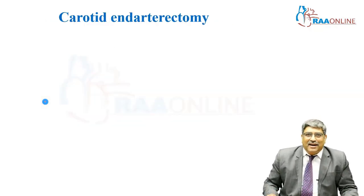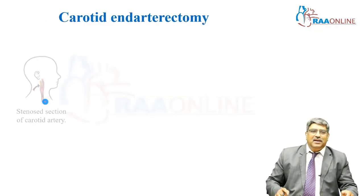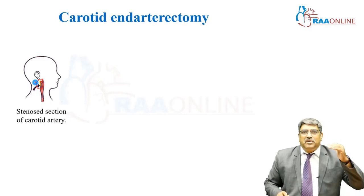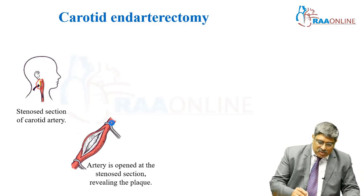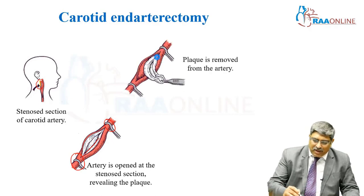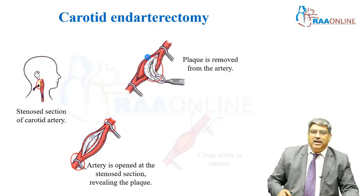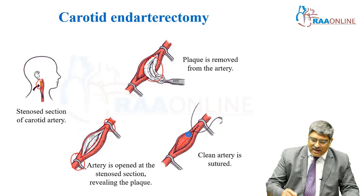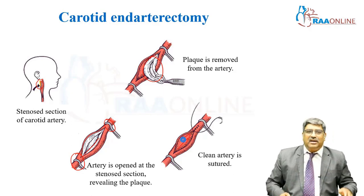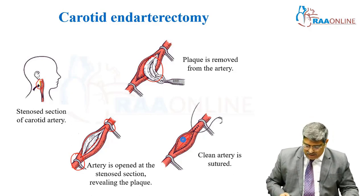Coming to carotid endarterectomy — here there is going to be a plaque in the carotid artery which reduces the blood supply to the brain. What you do is you take control of the proximal and the distal part, open the carotid artery, remove the plaque, establish the blood flow, and later suture the incision made over the carotid artery. That is carotid endarterectomy.